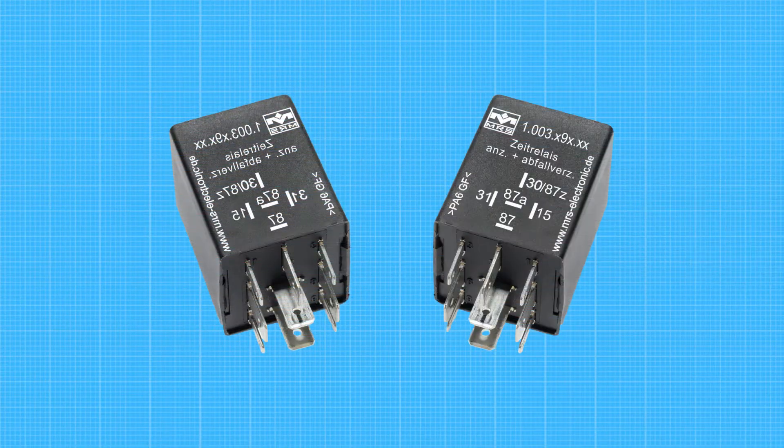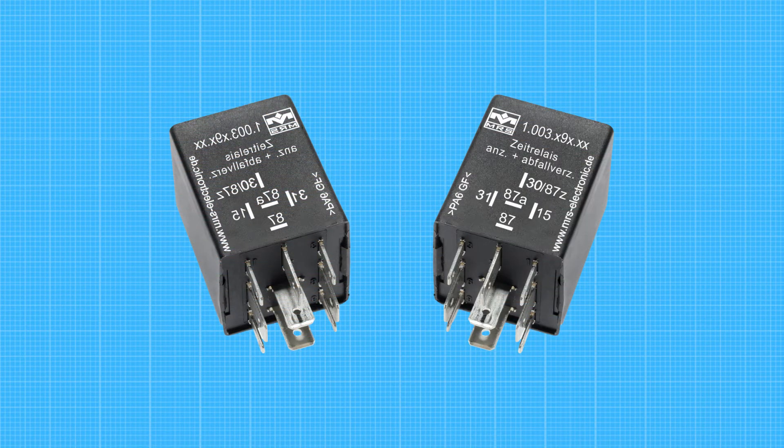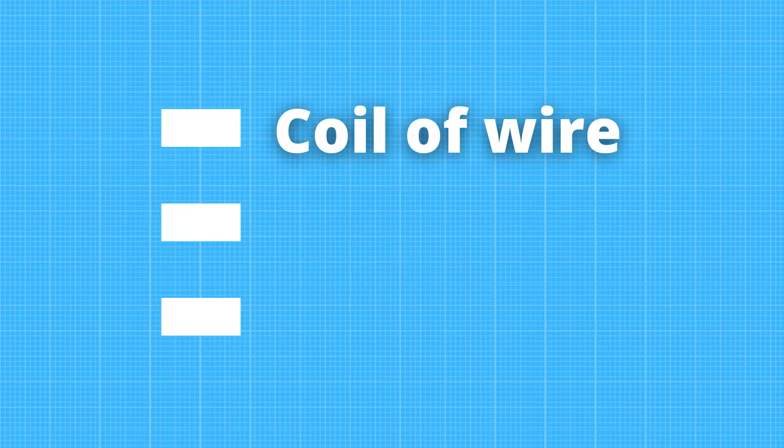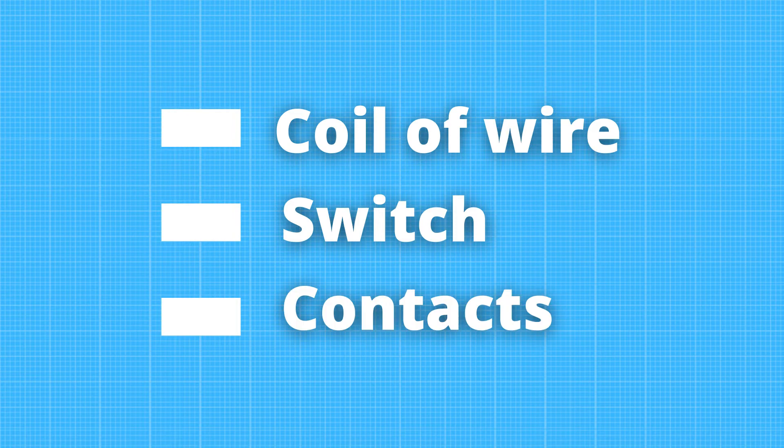The relay can be energized at one time and energized at another. This allows it to open and close and interrupt and re-establish electric circuits. In order for a relay to operate, it needs three basic components: a coil of wire, a switch that can open a circuit, and a set of contacts.